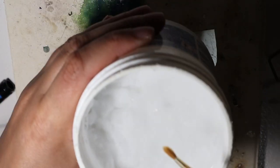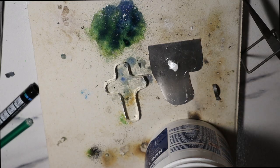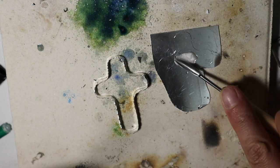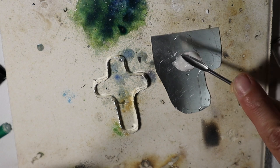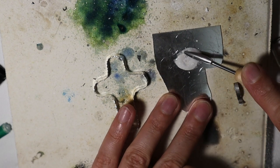I'm using for soldering powder or paste, whatever it's called. It's called Handy Flux. I'm going to apply it over the cross and over the bezel strip for soldering.